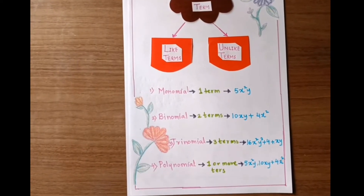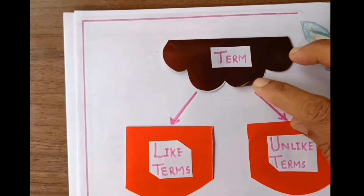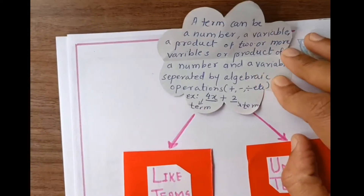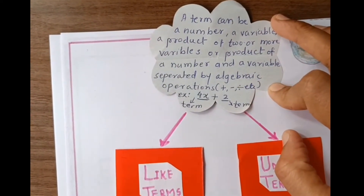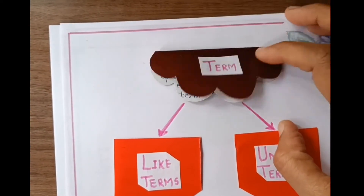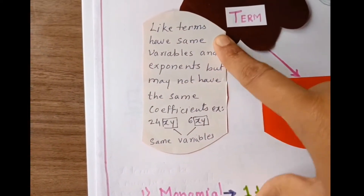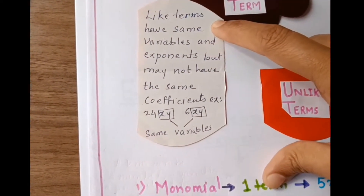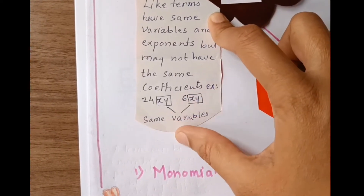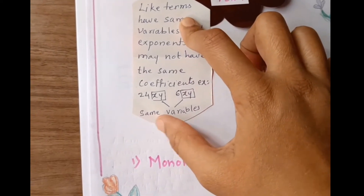Next one is term. Here is the meaning of term with an example. There are two types of term: like terms and unlike terms. Here is the meaning of like terms with an example. Like terms means which have same variables.